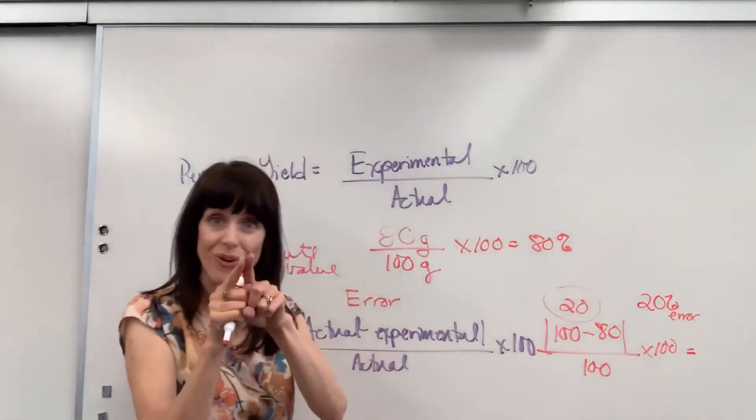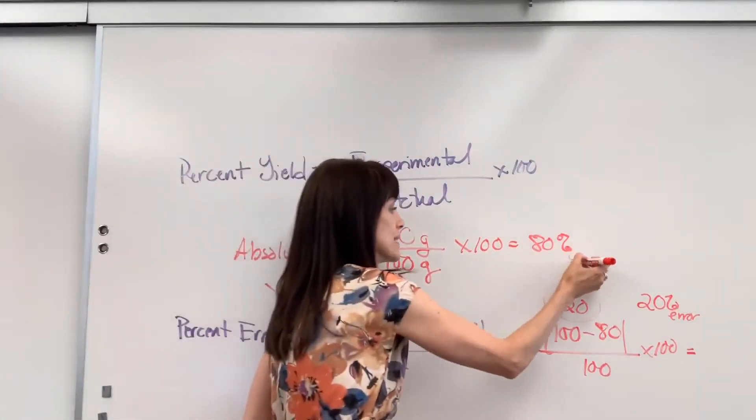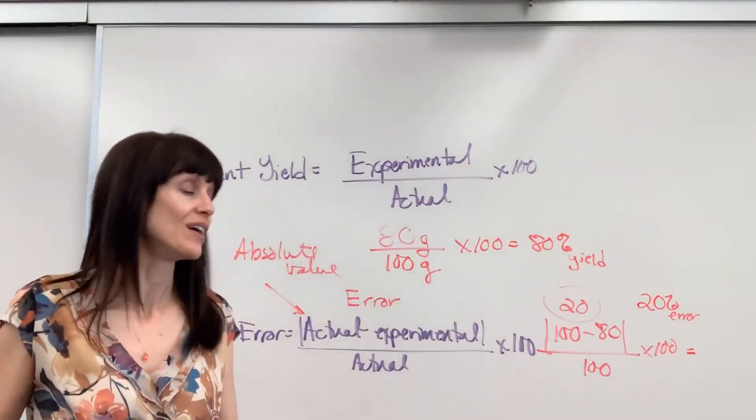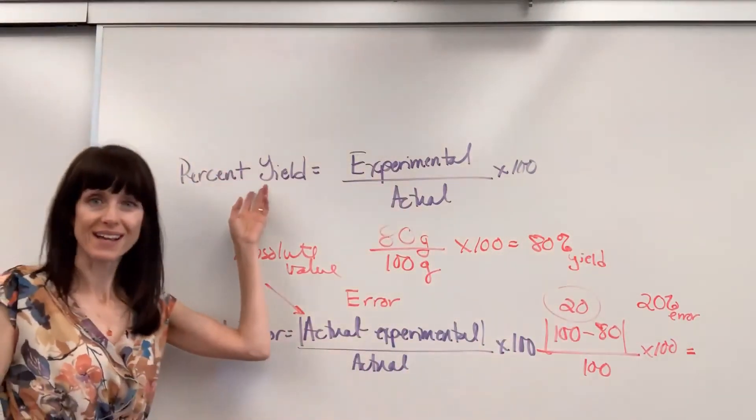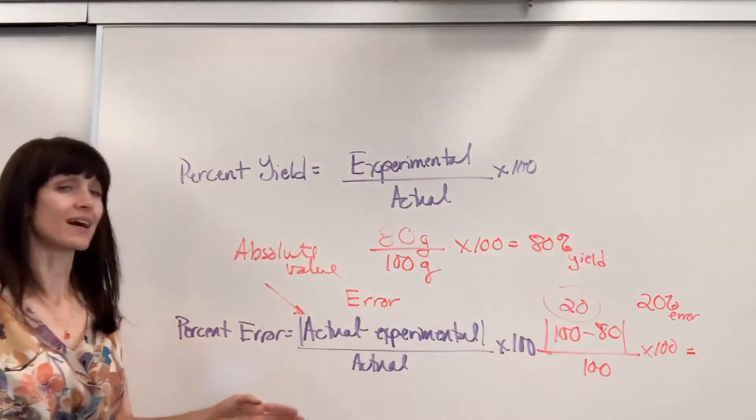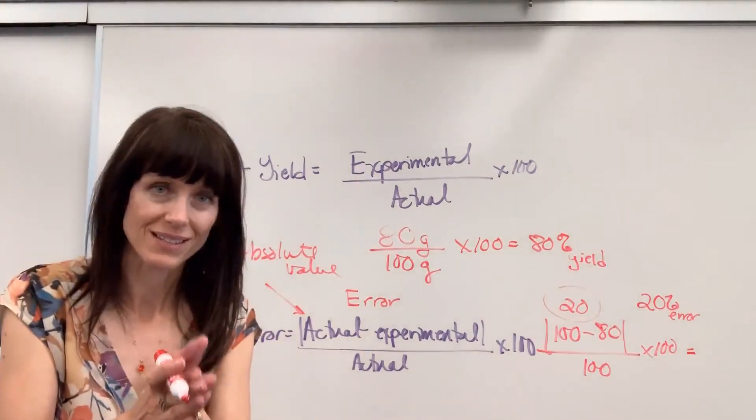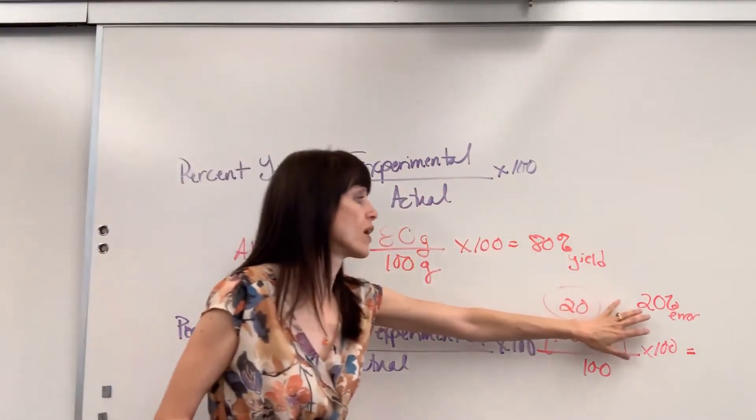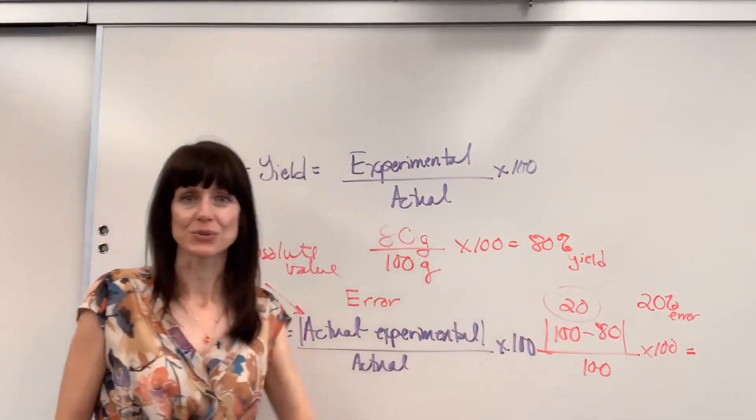And notice the correlation. We had an 80% yield. I bet right now you just had the aha moment of when you add percent yield plus percent error, that's 100%. This is how close you were, and this is how far off you were from the actual value.